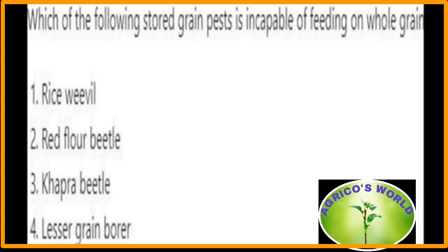Which of the following stored grain pests is incapable of feeding on whole grain? The red flour beetle, Tribolium castaneum, belonging to the family Tenebrionidae and the order Coleoptera, is a secondary pest. Secondary pests feed on stored products already damaged by primary pests, or on finished products such as broken grains, maida, or flour. The red flour beetle is incapable of feeding on whole grain because it is a secondary pest; all remaining pests listed are primary pests capable of feeding on whole grains.